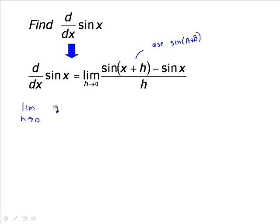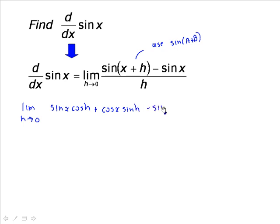The limit as h approaches 0 of: sine x times cosine h, plus cosine x times sine h, minus sine x — all over h.